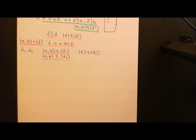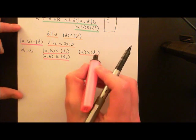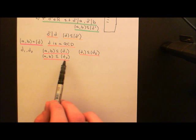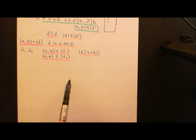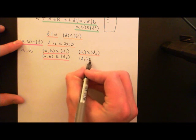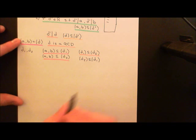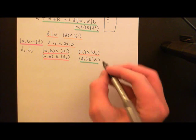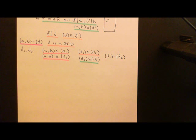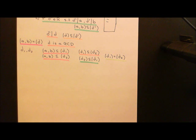You can then apply the exact same argument the other way around. If D2 is a greatest common divisor, its principal ideal must be contained within the principal ideals of all other common divisors, and D1 is a common divisor. So the principal ideal generated by D2 is contained within the principal ideal generated by D1. Since each is contained in the other, the principal ideal generated by D1 equals the principal ideal generated by D2.